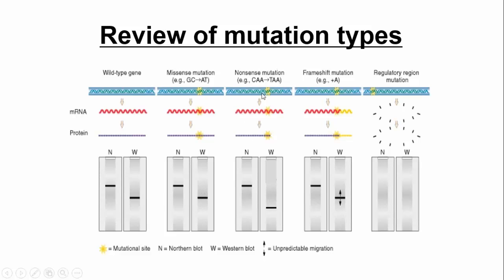Let's look at the nonsense mutation. If we introduce a premature stop, remember that stop is visualized at the level of protein — we mean the translation of the protein stopping early. So the length of the messenger RNA is not affected, so the northern blot would be the same as our control. The western blot, though — the protein will be shorter than normal, so the protein will run faster on the western blot, and you'll see it all the way down here.